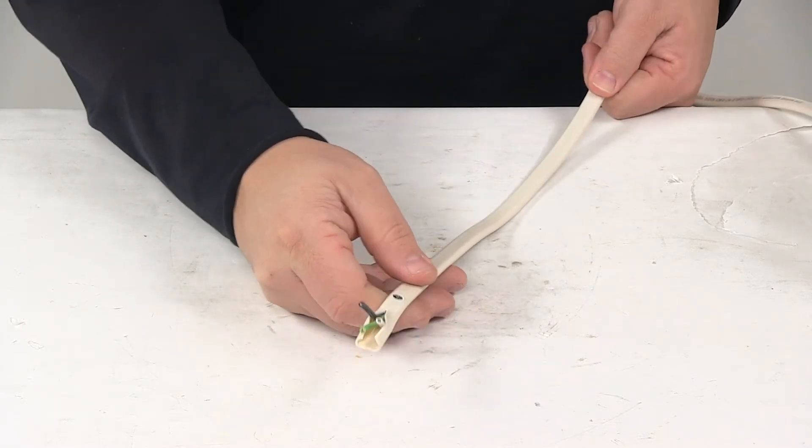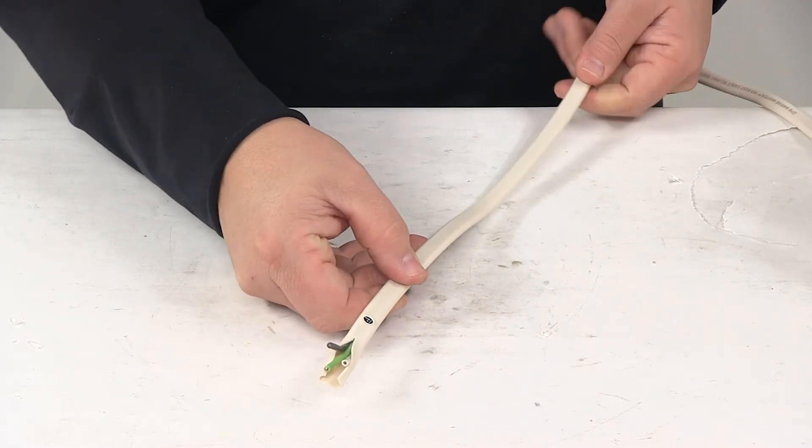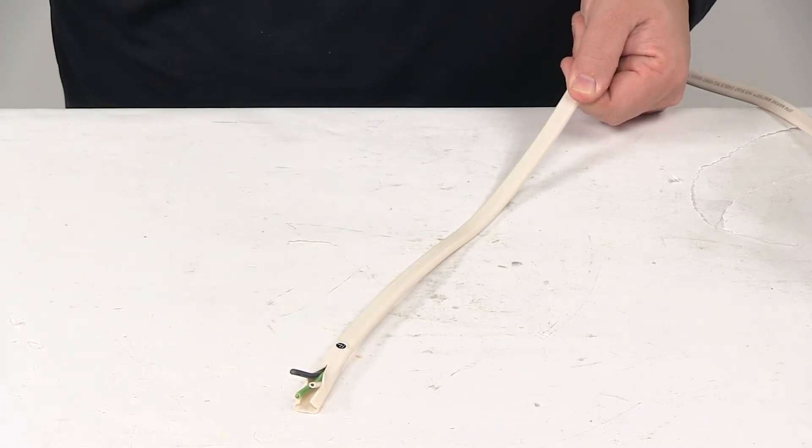And again, it's sold by the foot here at eTrailer.com. And that's going to do it for today's look at the triplex boat cable with the white outer jacket.